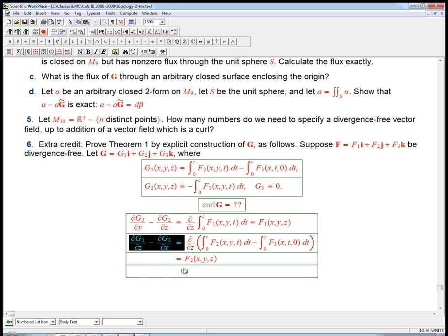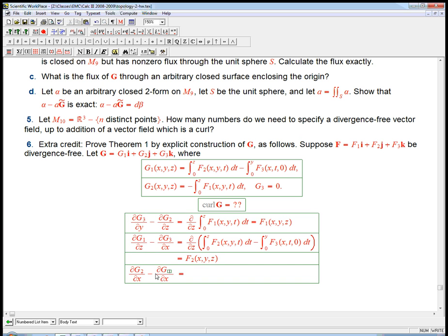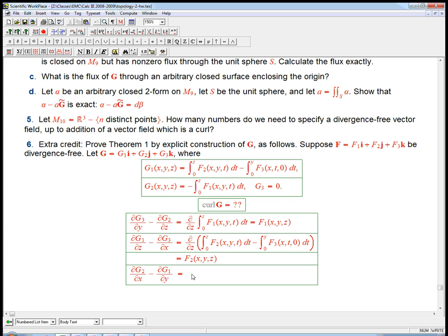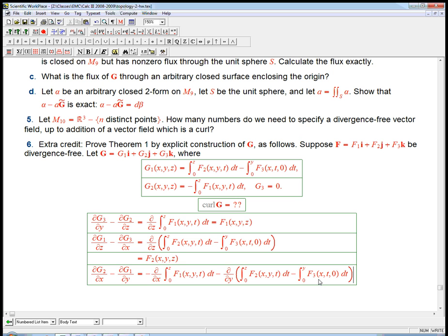Now the last one is the most interesting one. I'm going to promote this to a 2, promote this to an x, promote this to a 1, and promote this to a y. This should end up being f₃. Let's see if it is. d by dx of g₂, that's not 0.